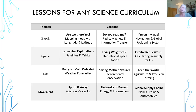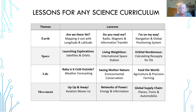These are the lessons you'll find in the curriculum in Earth, Space, Life, and Movement — three lessons in each of those themes. The one I'm going to talk about today is the first one: 'Are We There Yet? Mapping It Out with Latitude and Longitude' and 'I'm On My Way: Navigation and Global Positioning System.' So let's get started.